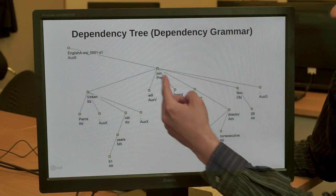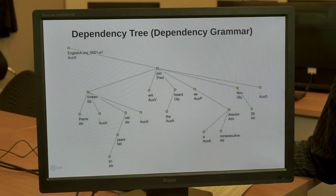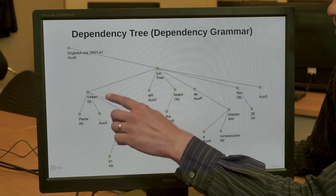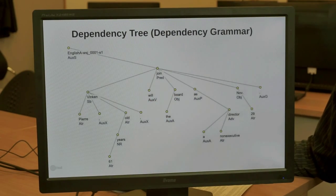In dependency trees, all nodes—the leaves as well as the inner nodes in a tree—correspond to the words in the sentence, and there are no non-terminal labels.